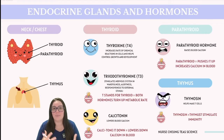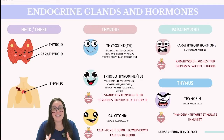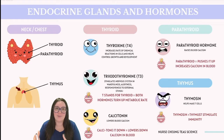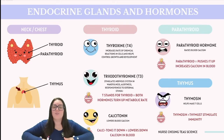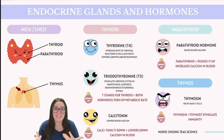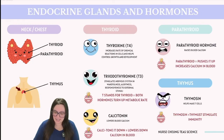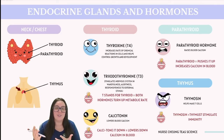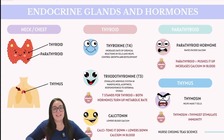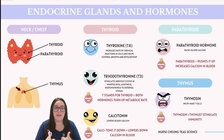Some easy ways to remember T4, T3, calcitonin, and parathyroid hormone: think of the T in T4 and T3 as standing for thyroid, and the numbers four and three indicate the number of iodine molecules each contains. Both hormones are crucial for turning up the body's metabolic rate. For calcitonin, remember calcitonin down — it helps lower calcium levels in our blood when they're too high. And for parathyroid hormone, think parathyroid pushes it up — it increases calcium levels in our blood when we don't have enough.